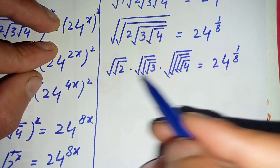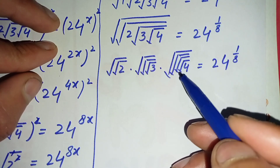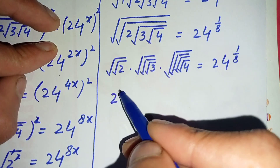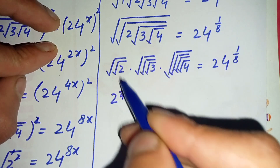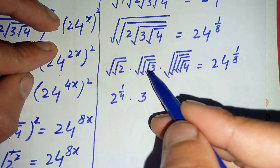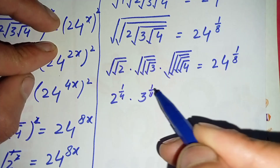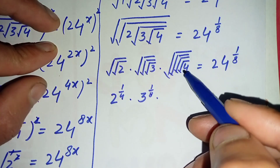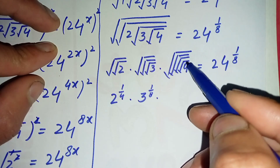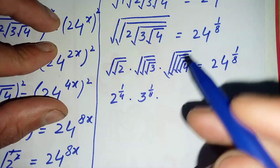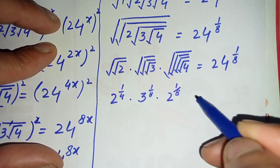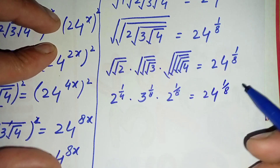Since square root is equivalent to the power 1/2, we replace the square roots with fractional exponents. This becomes: 2 raised to power 1/4 (multiplying 1/2 twice), times 3 raised to power 1/8 (multiplying 1/2 three times), times 2 raised to power 1/8 (since square root of 4 equals 2 raised to power 1), which equals 24 raised to power 1/8.